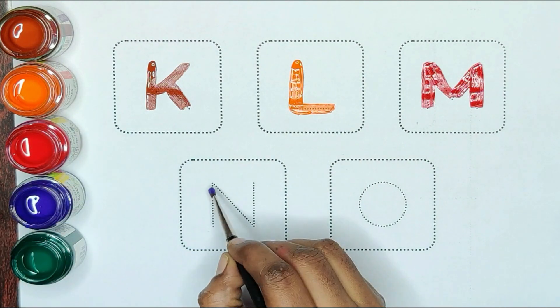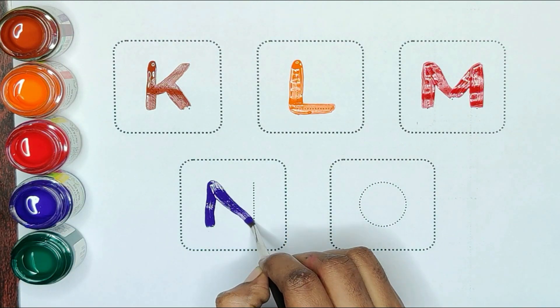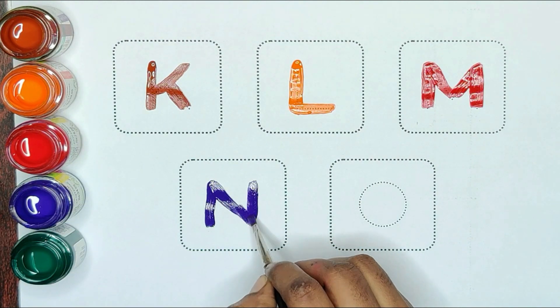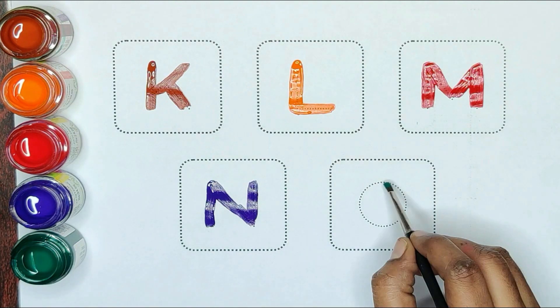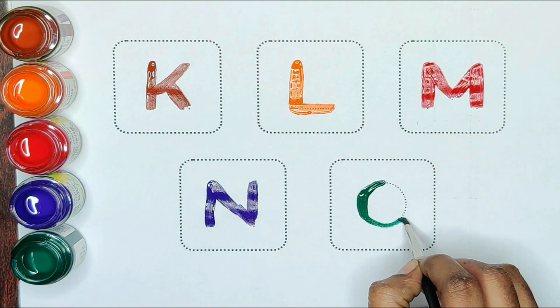Blue color, N. N for nose. Green color, O. O for onion.